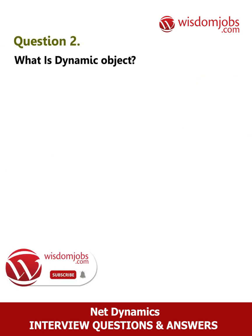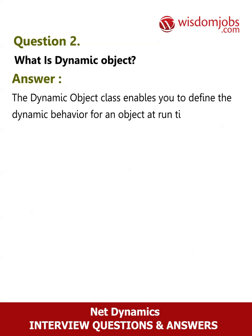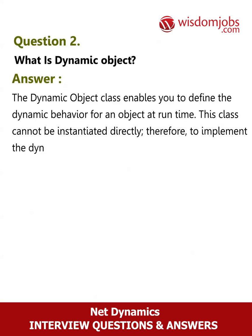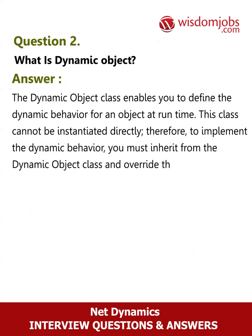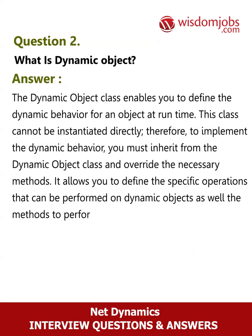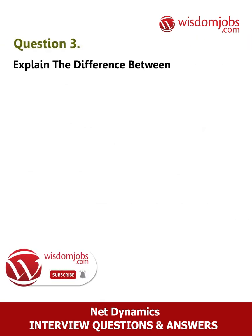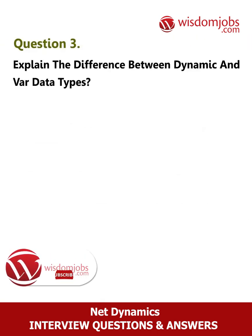Question 2: What is Dynamic Object? Answer: The DynamicObject class enables you to define the dynamic behavior for an object at runtime. This class cannot be instantiated directly; therefore, to implement dynamic behavior you must inherit from the DynamicObject class and override the necessary methods. It also allows you to define the specific operations that can be performed on dynamic objects and the methods to perform those operations.